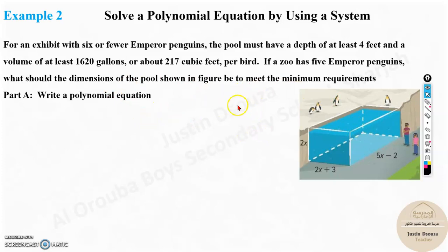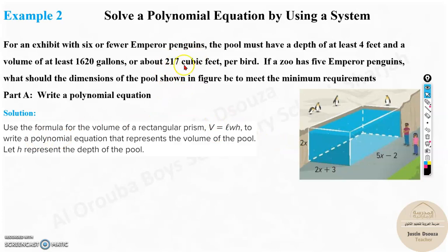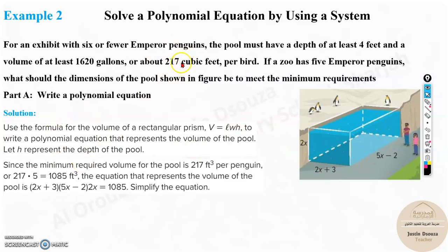So now you have five birds with you. So what would you do? You need to multiply. So over here, when you multiply this five times 217, what's going to happen? Before that, volume is basically all the dimensions must be multiplied. Now over here, since they have told five emperor penguins, it must be so much. 217 into five. That is 1085 feet cube.